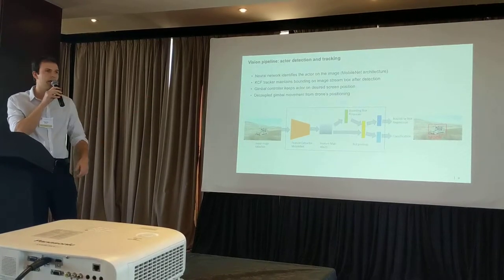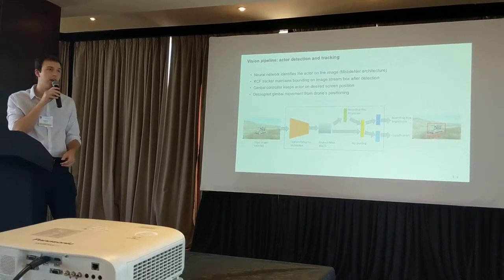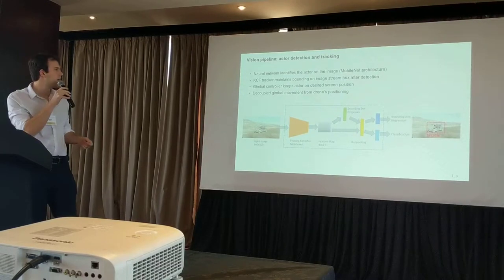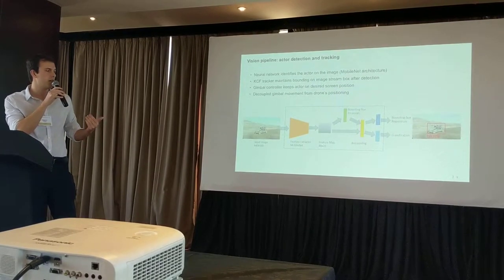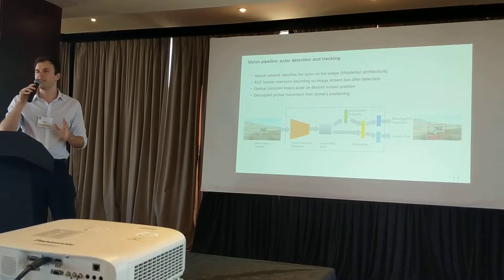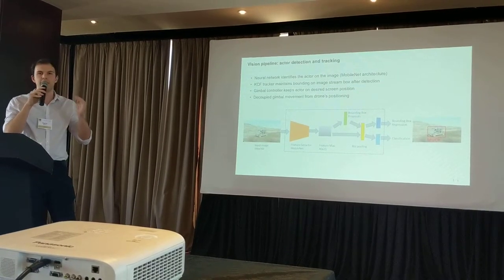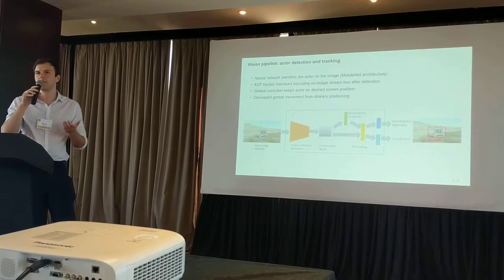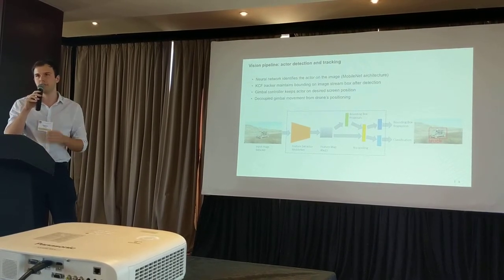For the vision pipeline, we process the image from the gimbal with a custom neural network architecture optimized to run onboard the drone, so it runs quite fast. We get a bounding box of our actor — a car, bicycle, or person — and based on this bounding box, a PID controller on the gimbal places the actor at the desired screen position, such as the center or rule-of-thirds position.